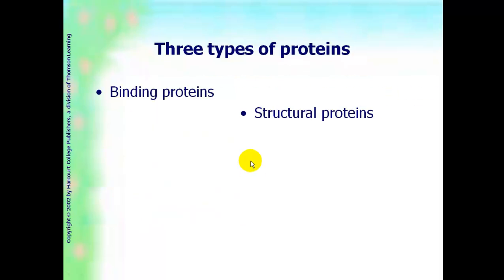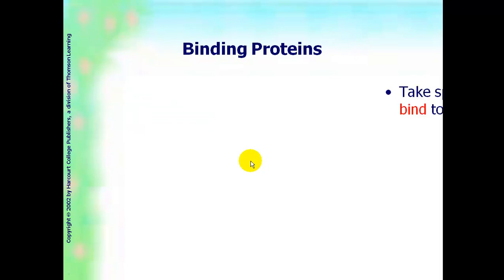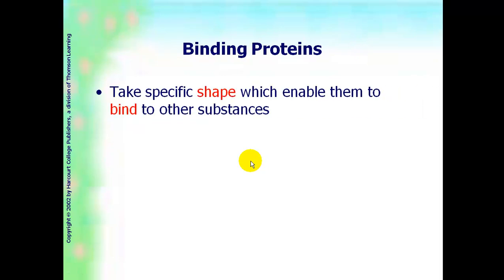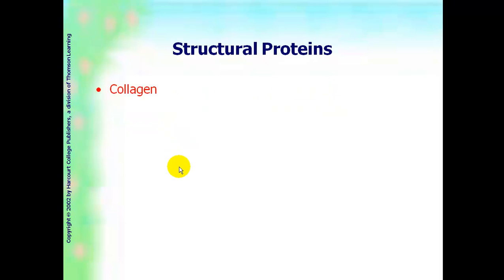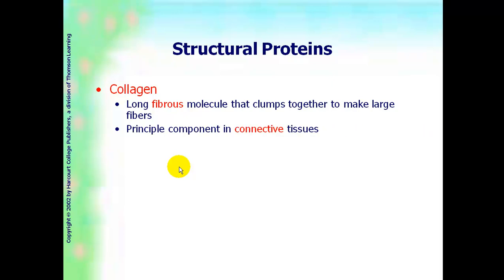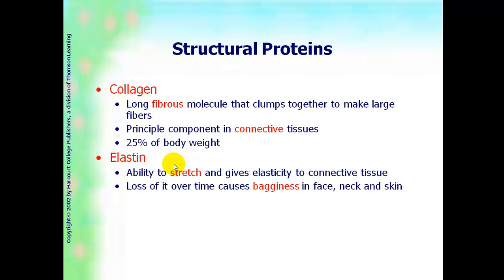There are three types of proteins: binding proteins, structural proteins, and chaperones. Binding proteins take specific shape, and that allows them to bind to other substances. For example, hemoglobin is a binding protein because it binds to oxygen. Structural proteins are like collagen, which are long fibrous molecules. They're the principal component in our connective tissues. Then you have elastin, which gives us stretching ability and elasticity in our skin. Loss of elastin over time causes wrinkles and bagginess.